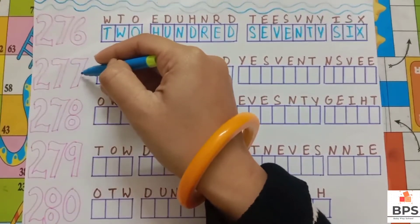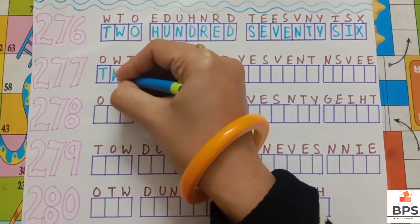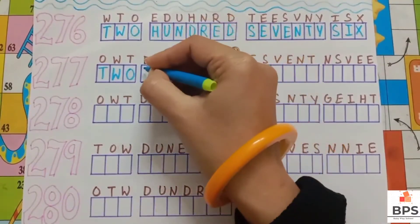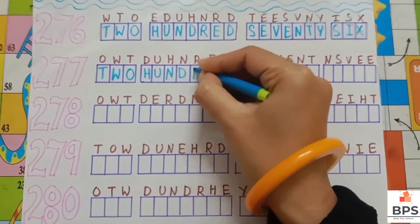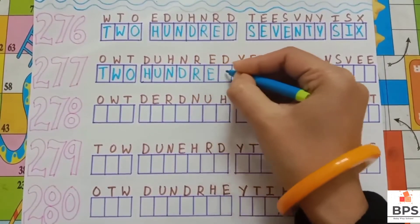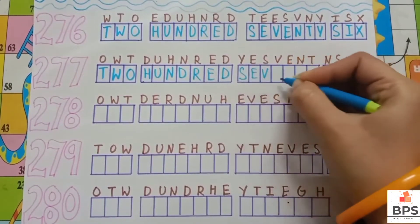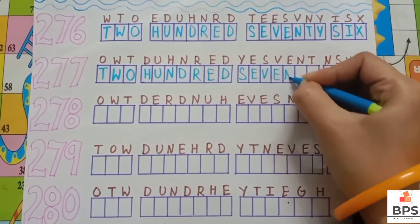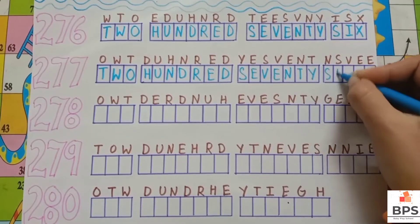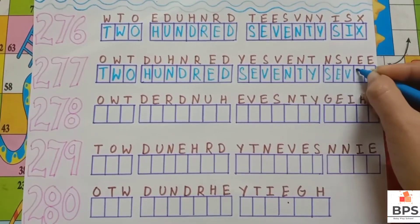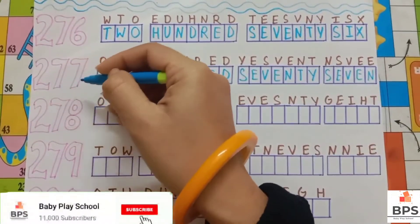277: T, W, O, 2, H, U, N, D, R, E, D, 100, S, E, V, E, N, T, Y, 70, S, E, V, E, N, 7. 277.